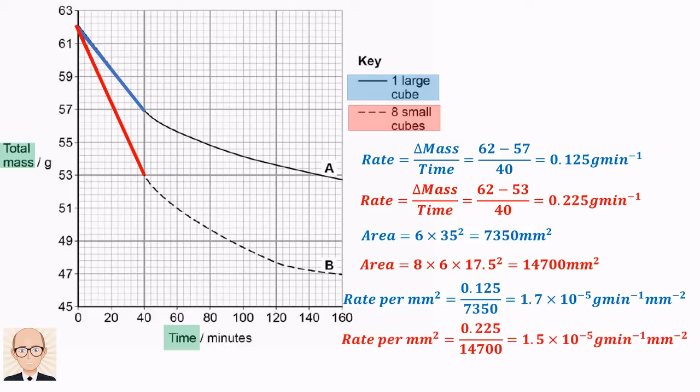For the small cubes, we get a value of 1.5 x 10 to the minus 5 grams per minute per square millimetre.